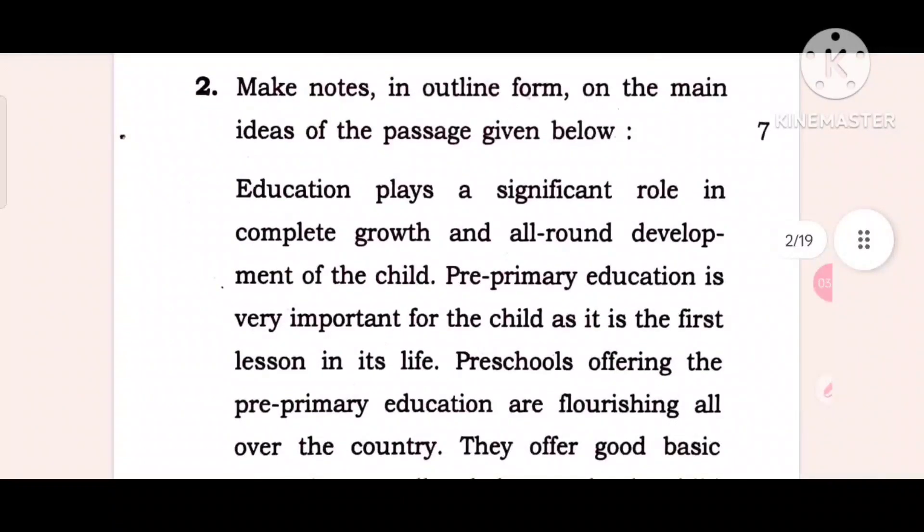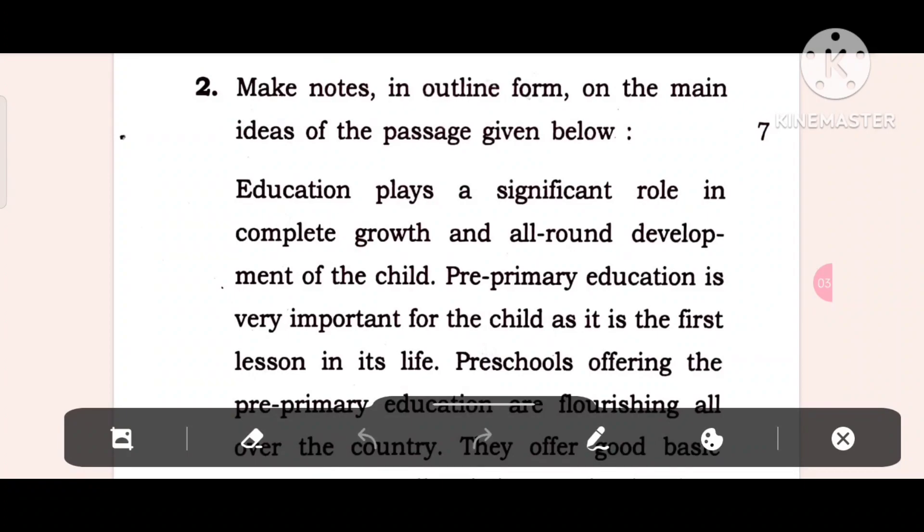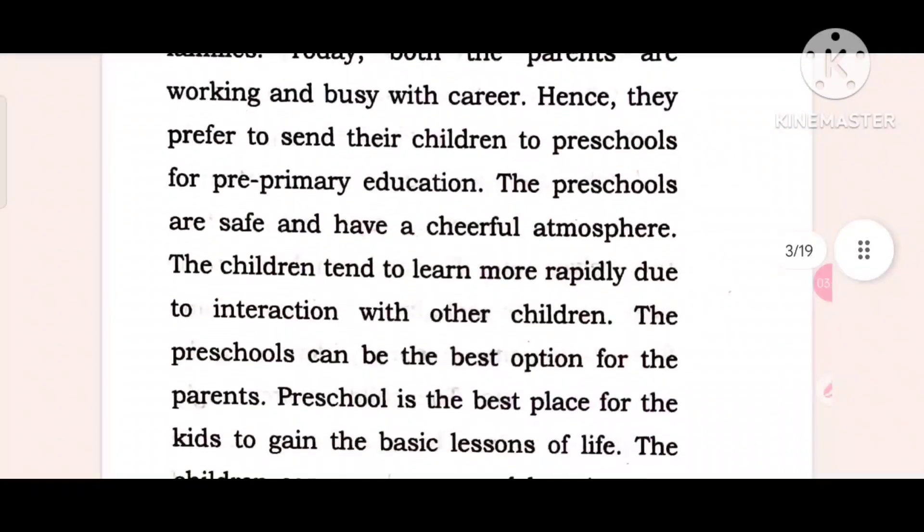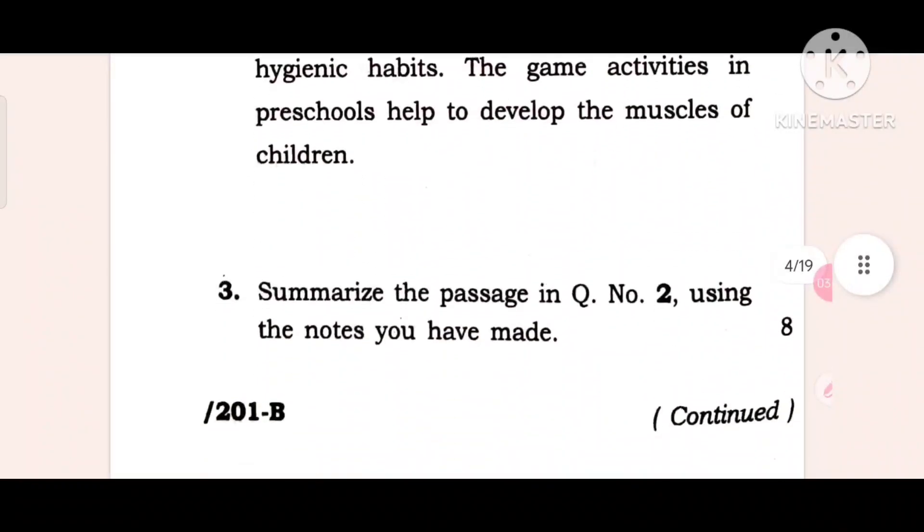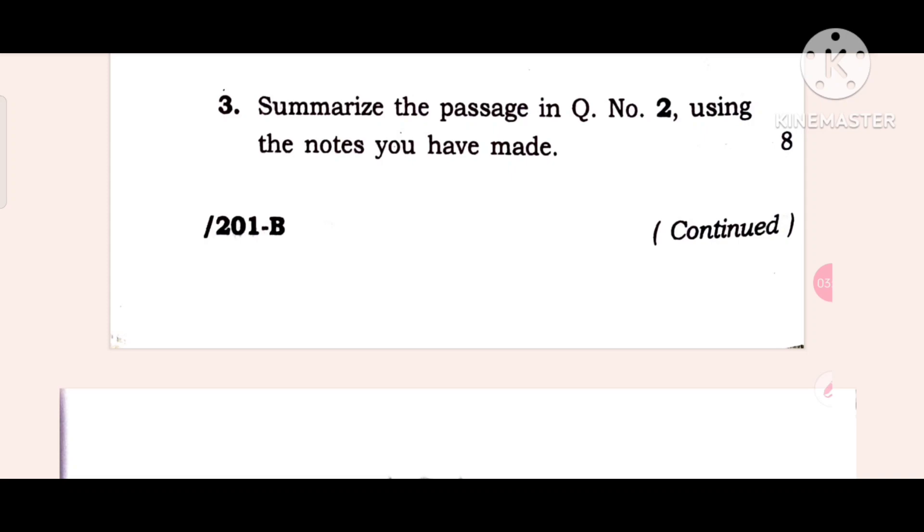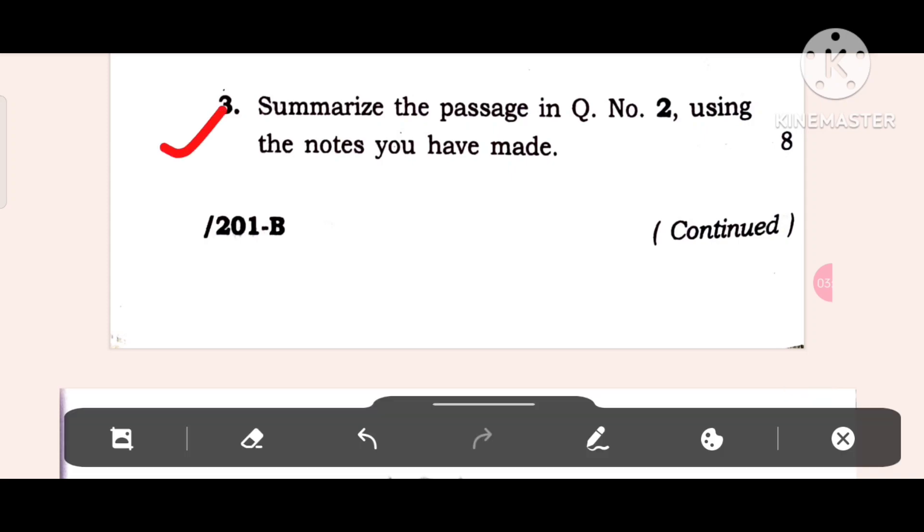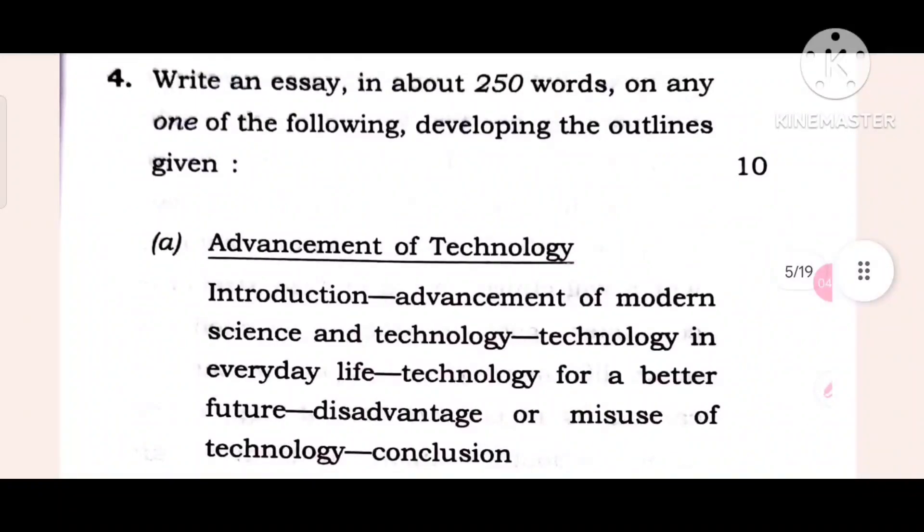Second question: Make notes in outline form on the main ideas of the passage given below. This is note making or summarizing. You will get seven marks. The passage is about education plays a significant role in complete growth. Then next question, number three: Summarize the passage in question number two using the notes you have made. You will use the notes to summarize, and you will get three marks.